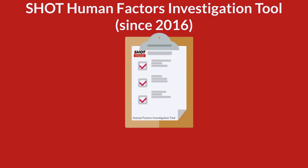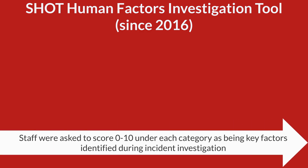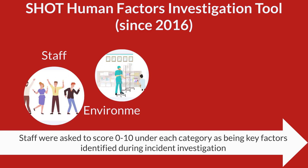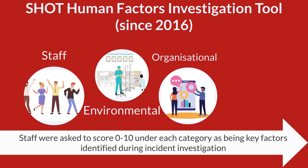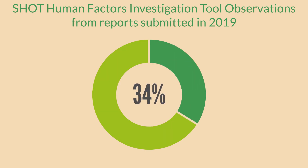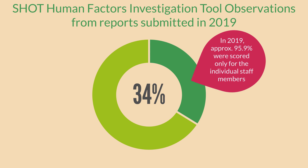Since 2016, SHOT have used the Human Factors Investigation Tool and this asks staff to score 0 to 10 under each category as being key factors identified during incident investigation. There are four categories: staff, environmental, organisation, and government and regulatory factors. Over a third of incidents were scored for a single contributory factor and the vast majority of these were given a score only for the individual staff member.